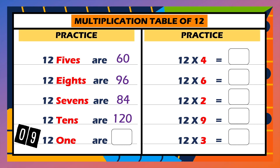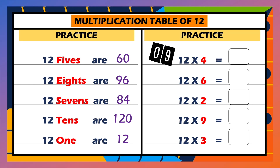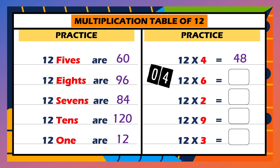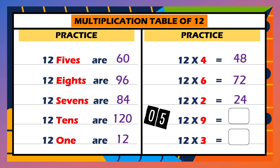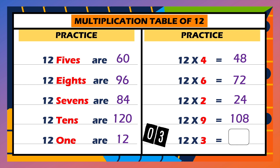12 ones are... 12. 12 fours are... 48. 12 sixes are... 72. 12 twos are... 24. 12 nines are... 108. 12 threes are... 36.